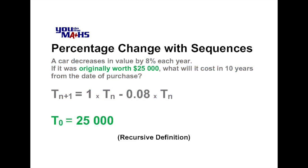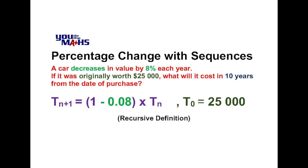We say we start with 25,000, but notice it's written as t0, whereas you'd normally think the first term would be t1. The reason it's t0 is because in this problem we're dealing with a value over a period of years, and the original amount is at 0 years — in other words, no time has passed. If we want to work out the value next year, that means 1 year has passed. So the start value is t0, which is still $25,000, because that's the original value of the car.